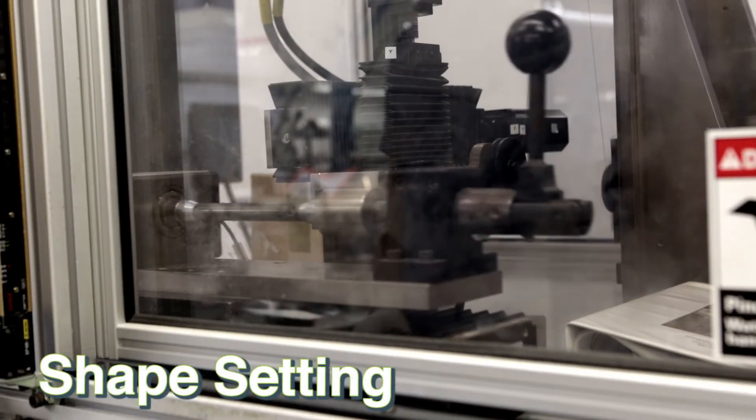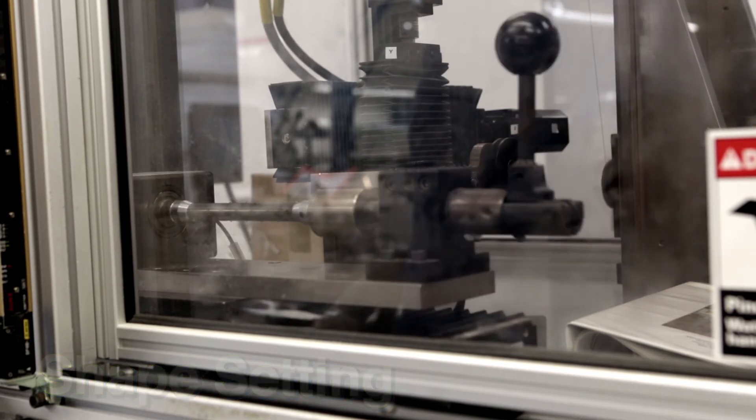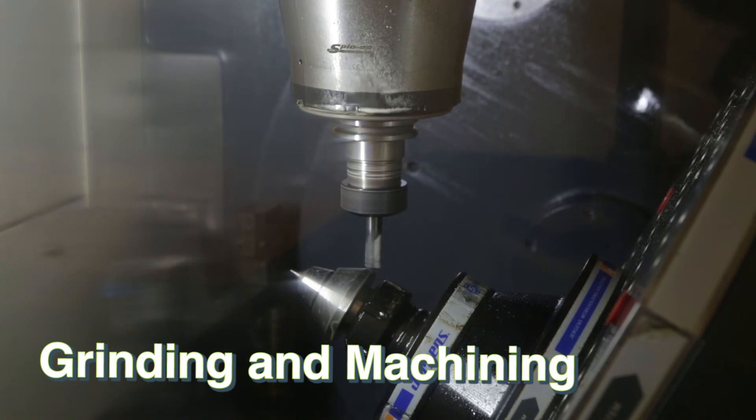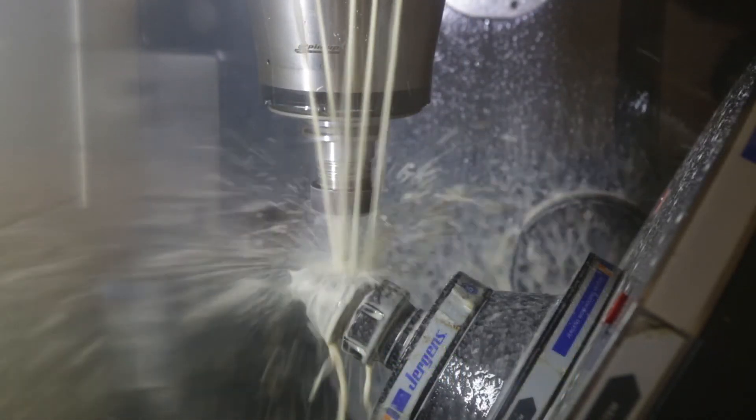Shape setting is used to form our semi-finished raw materials into complex finished components. Facility investments at Memory have made it possible for us to grind virtually any configuration, using both conventional and cutting-edge grinding equipment.